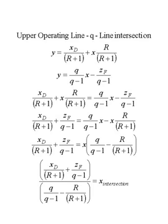All three lines specified in the previous slide intersect at the feed stage. The point where these three lines intersect can be calculated by setting the equations equal to each other. Taking the upper operating line equation and the Q line equation, since they intersect, we set the two equations equal to each other. Through some algebra, we separate X away from all other parameters, and the point where it intersects on the X axis is given by the equation at the bottom.